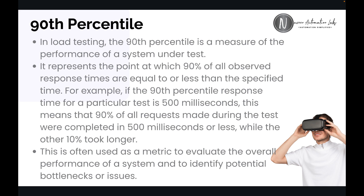For example, there are 1000 users or 1000 threads hitting a specific API or specific feature. So how exactly is your system responding? If you are expecting that each and every request should take around 500 milliseconds, then 90th percentile means 90% of the users are getting the response within 500 milliseconds, and the rest of the 10% of users are taking longer — more than 500 milliseconds. We are not expecting all 1000 users to get the response within 500 milliseconds, since maybe the server is slow or taking time to calculate business logic. So we're happy with the 90th or 95th percentile.